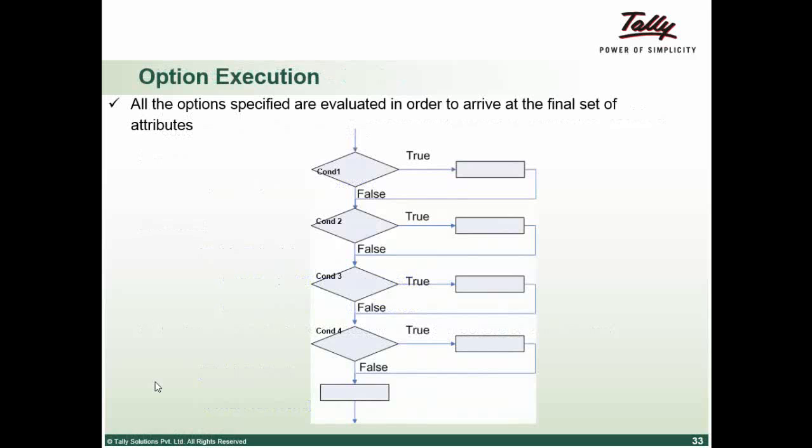All the options are specified and evaluated in order to arrive at a final set of attributes. So it checks all the conditions in the loop — condition 1 true or false, then the second condition, condition 3, condition 4 — each and every condition is evaluated.